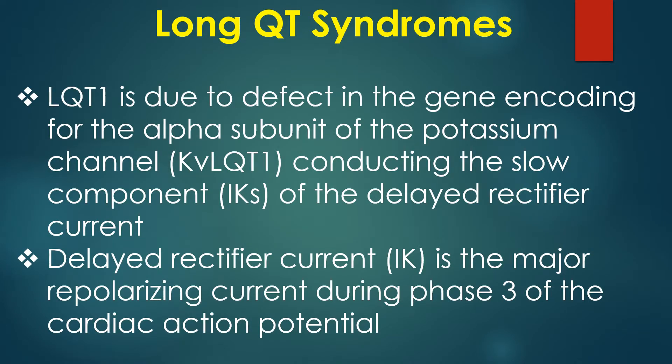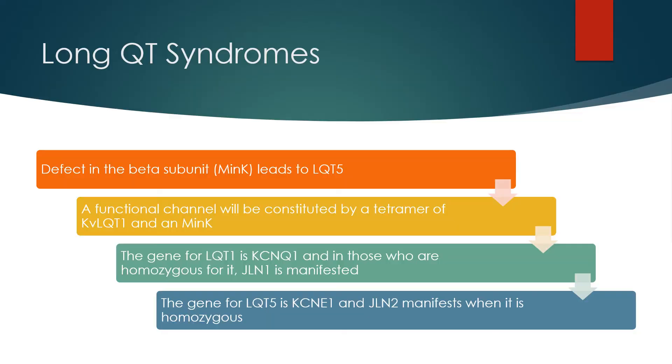LQT1 is due to a defect in the gene encoding the alpha subunit of the potassium channel conducting the slow component of the delayed rectifier current. The delayed rectifier current is the major repolarizing current during phase 3 of the cardiac action potential. A defect in the beta subunit leads to LQT5.